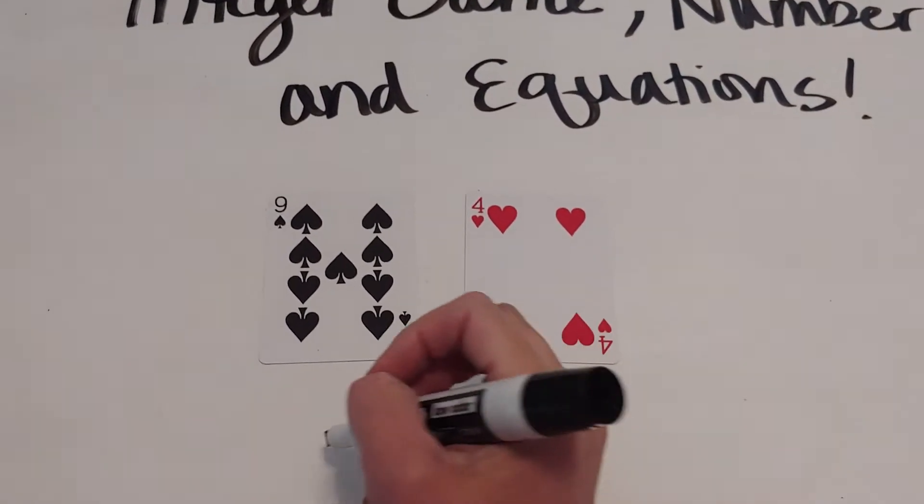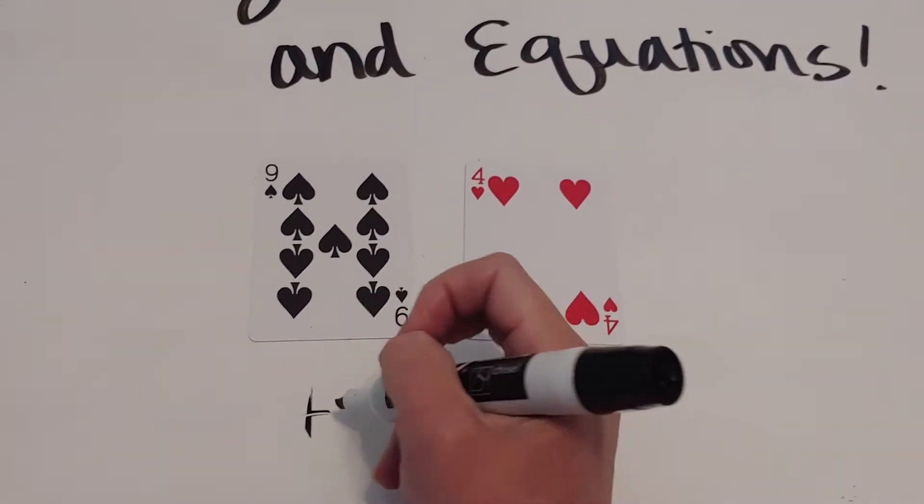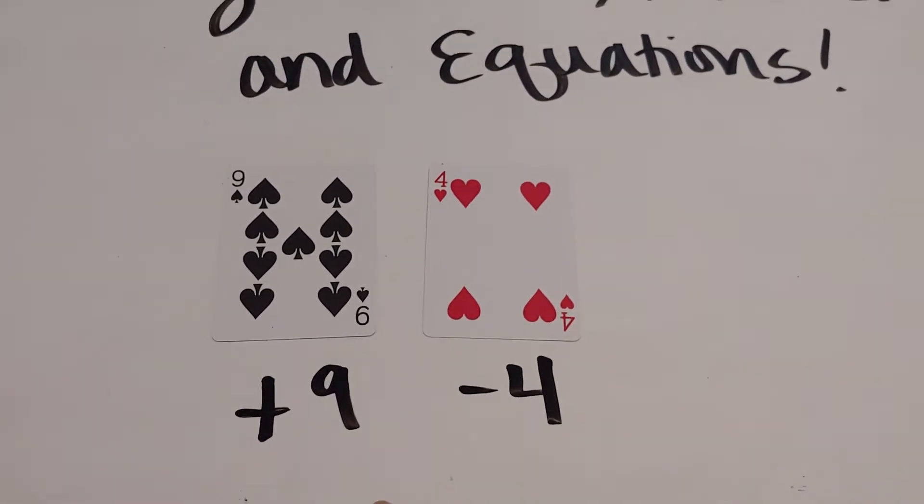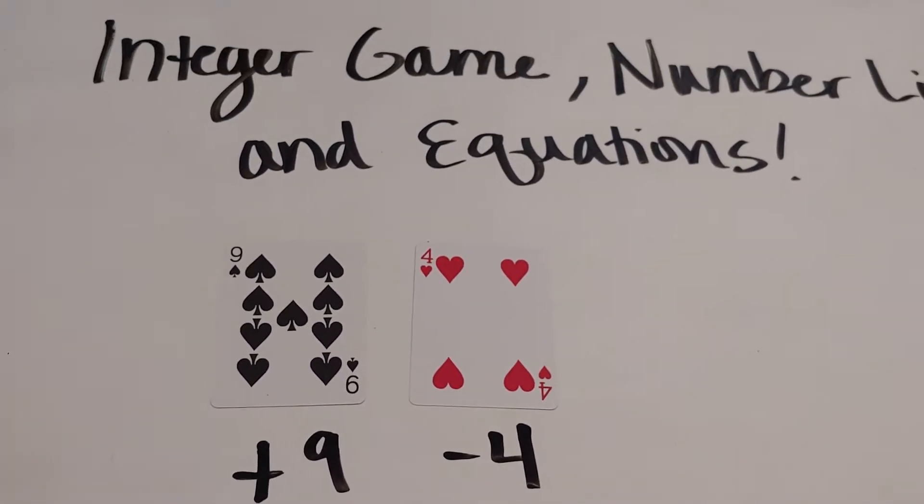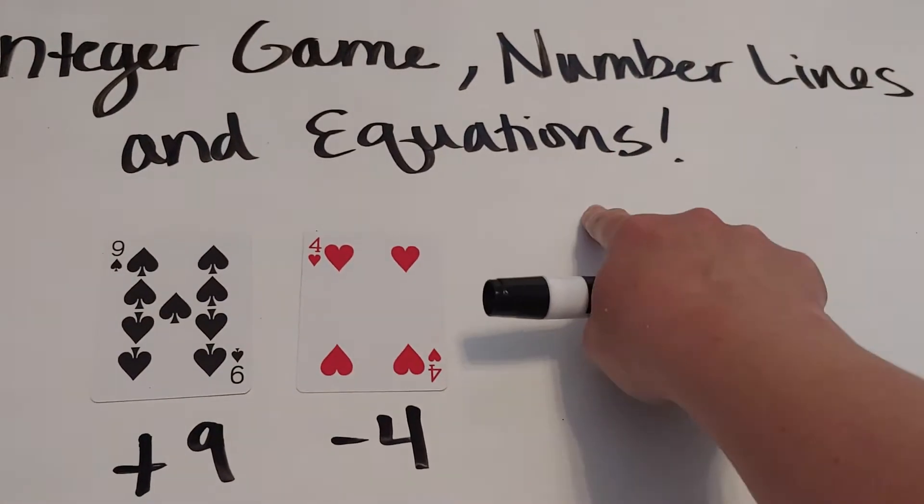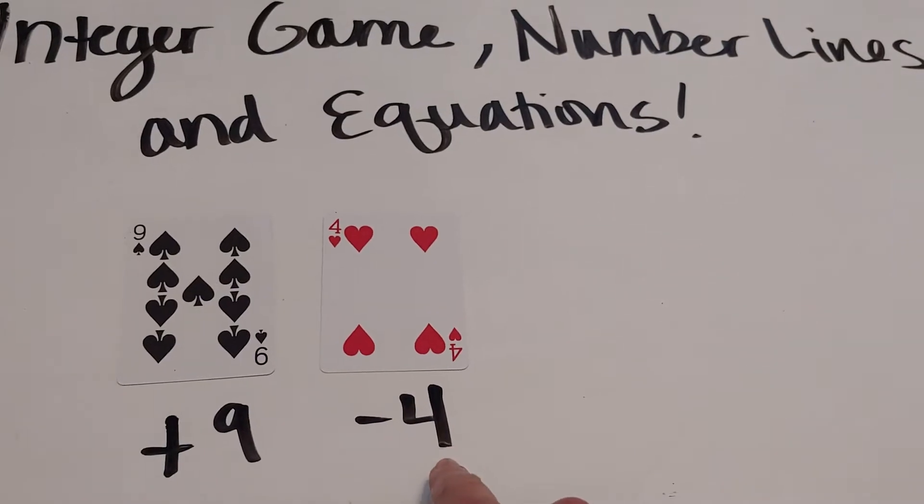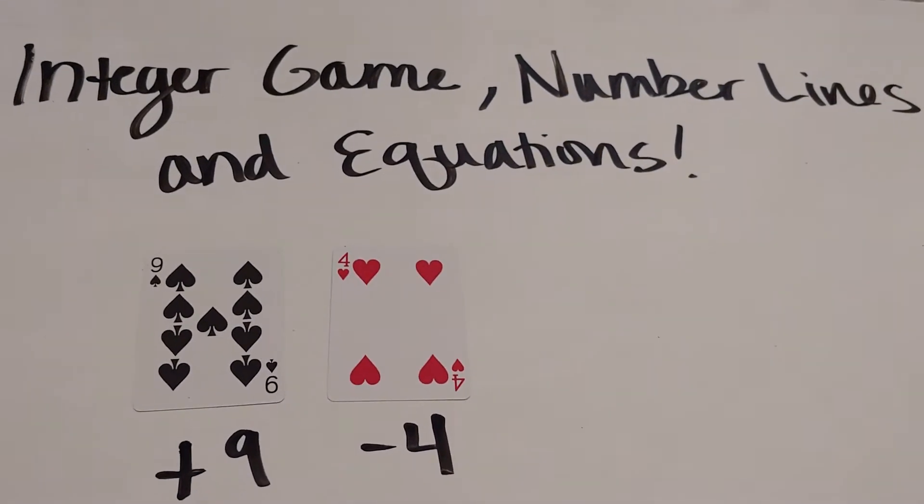For example, here they would have positive nine and negative four. Students need to illustrate this on a number line and come up with an equation and an answer. What happens when I take positive nine and combine it with negative four?